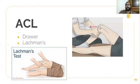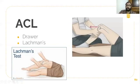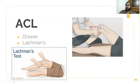Lachman's test is more specific and confirmatory compared to the drawer's test for three reasons. First, in the drawer's test at 90 degrees, there is already mild anterior translation of the tibia on the femur, whereas in the Lachman's position at 20 to 30 degrees there is no such movement. Second, if the patient is not relaxing the hamstring, ACL tear cannot be diagnosed with the drawer's test, but the hamstring is more relaxed in the Lachman's position. Third, in acute injury the patient cannot flex the knee up to 90 degrees, but Lachman's test at 20 to 30 degrees is still possible.